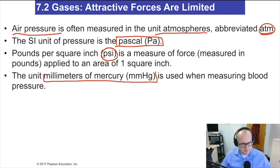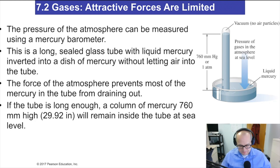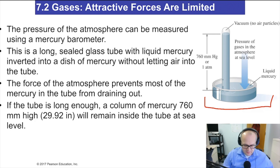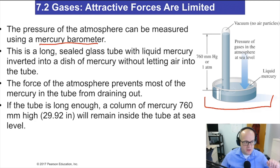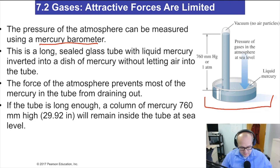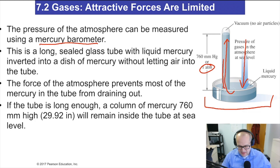Another quite common unit is millimeters of mercury — an old-fashioned way of measuring pressure that's still used today. It comes from the barometer, a device that measures gas pressure. The atmospheric pressure is measured using a mercury barometer: air pressure pushes down on a pool of mercury, forcing it up into an evacuated tube. At one atmosphere of pressure, the mercury rises 760 millimeters.